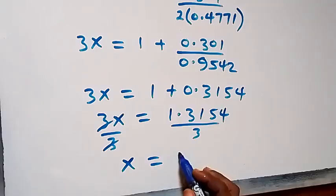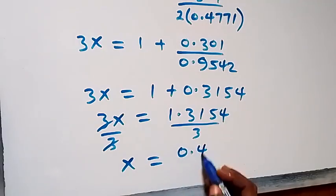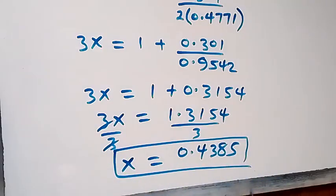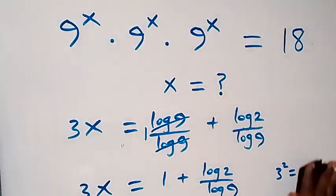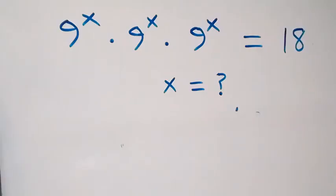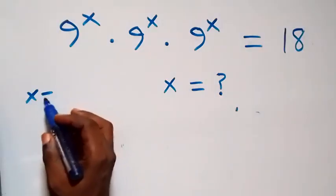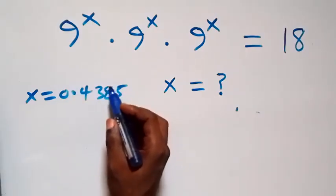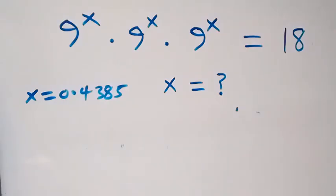We have x now equals to 0.4385. And here we have the solution to this problem. Then let's check to confirm if this satisfies the given problem. When we substitute the value of x, which is x equals to 0.4385.